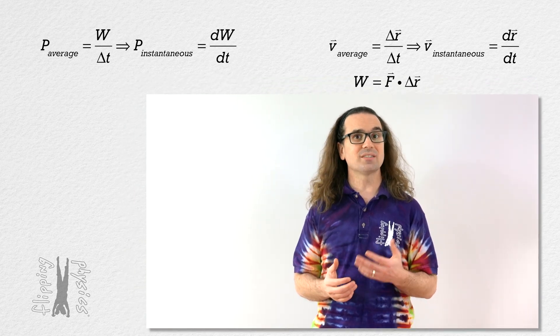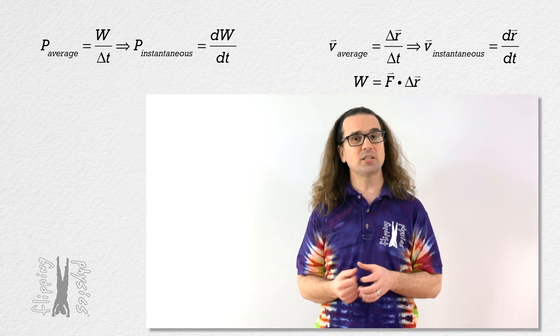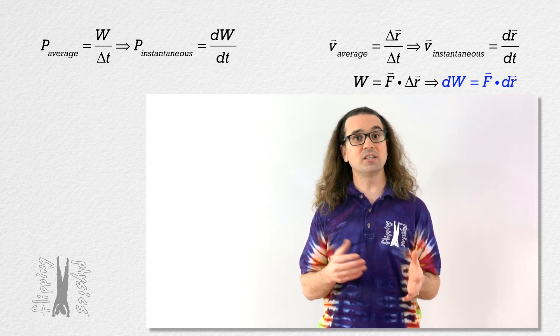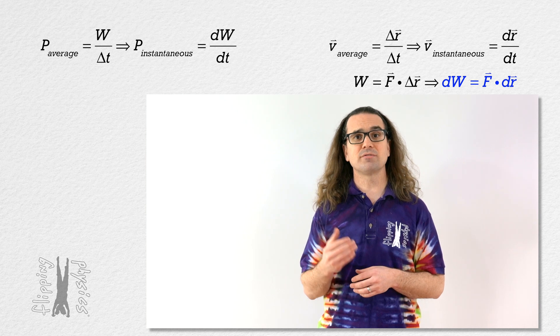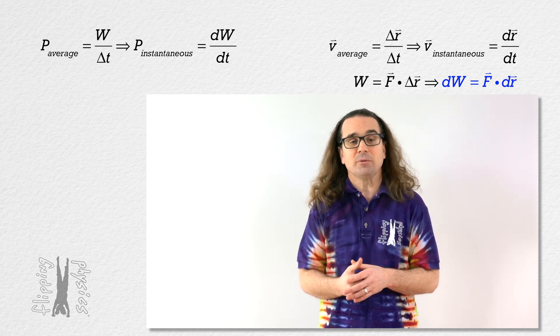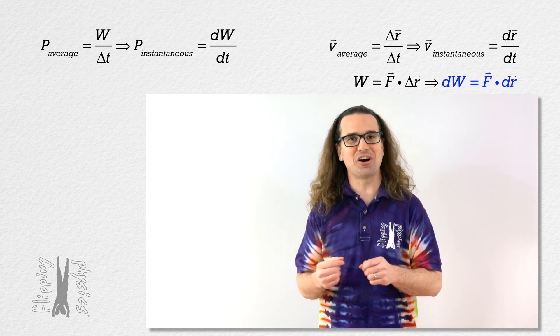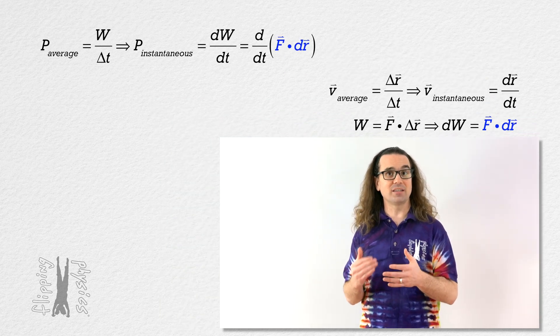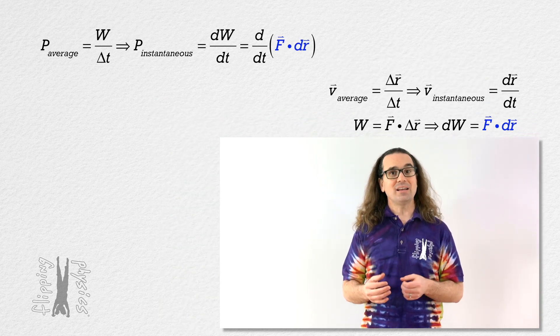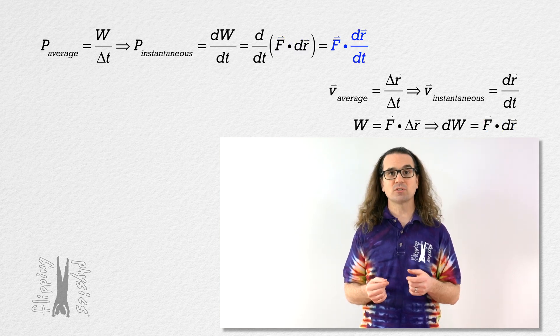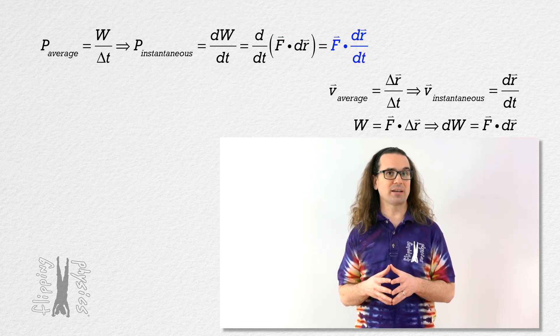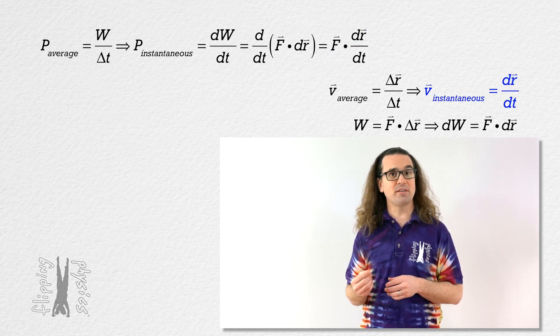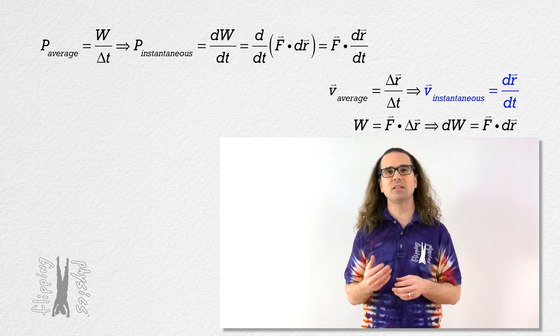Now we also know that work is the dot product of force and displacement. That means an infinitesimally small amount of work, dW, equals the dot product of force and an infinitesimally small change in position, dr. We can substitute that into our equation for instantaneous power. We get that instantaneous power equals the dot product of force and the derivative of position with respect to time. And Billy already pointed out that the derivative of position with respect to time equals velocity.